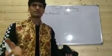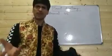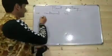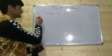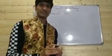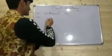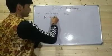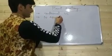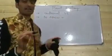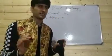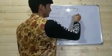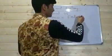In plant morphology we study external structures such as root, stem, leaf, flower, fruit, and seed. The scientist who founded plant anatomy is Nehemiah Grew, and that is why he is called the father of plant anatomy.